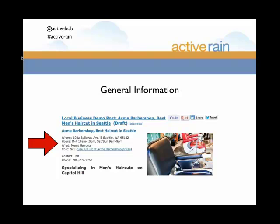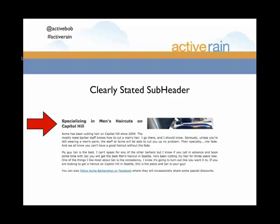It's important somewhere in the post to include a link back to the company's website. In my case, right in that cost line I've got a link back so readers can see the full list of Acme Barbershop prices. Then I include contact information — Ian's name and a phone number. This general information is best left as bullet points so it's really easy for somebody to get that basic set of information up front.